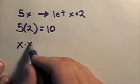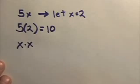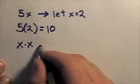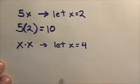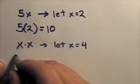Let's take another example. Let's try x times x. Again, if we are going to create a let statement, we are going to let x in this case equal 4.